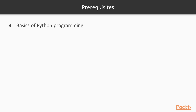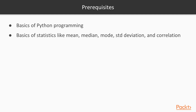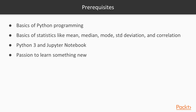What are some of the prerequisites for the course? One of the main prerequisites is basics of Python programming — knowing decision making statements like if/else and looping statements like for and while would be a great skill to have and will help you carry on with the course smoothly. Also, basics of statistics like mean, median, mode, standard deviation and correlation will be helpful. On the technical side, we will need Python 3 and Jupyter Notebook installed on your laptop, and most importantly, a passion to learn something new.